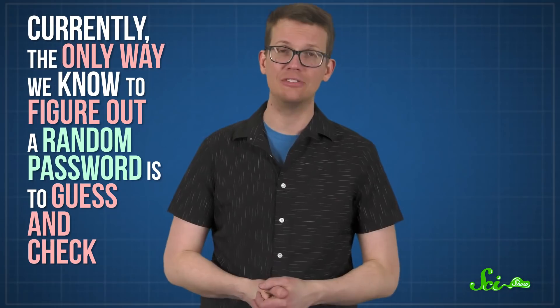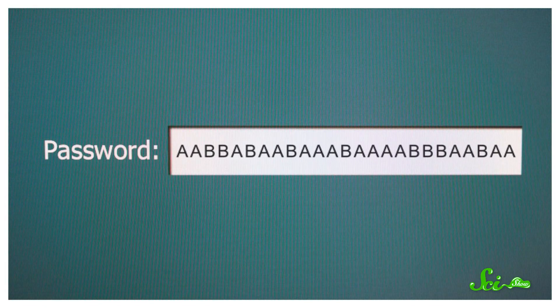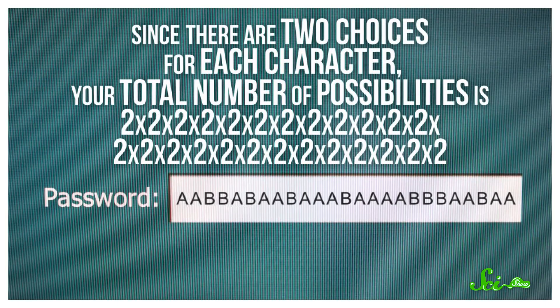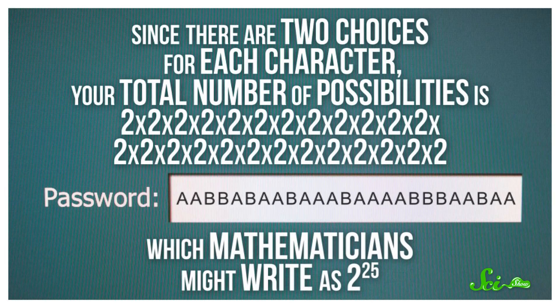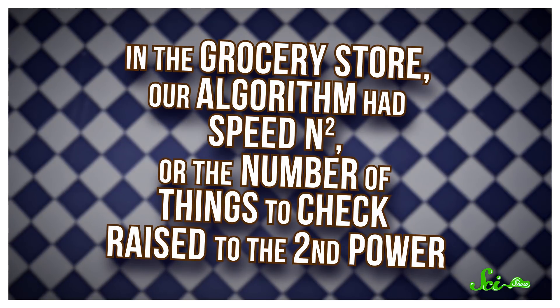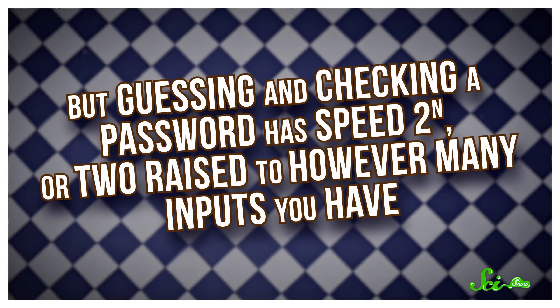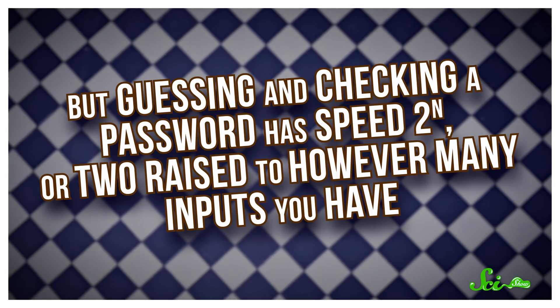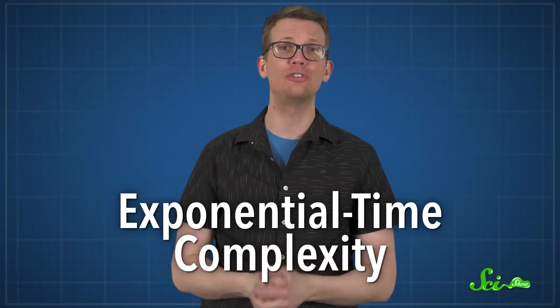As bad as that sounds, other algorithms are way worse. Think back to the password on your bank account. Currently, the only way we know to figure out a random password is to guess and check. So let's imagine you make a really dumb password — something that's 25 characters long but only uses two letters, A and B. Since there are two choices for each character, your total number of possibilities is 2 times 2 times 2 and so on, which mathematicians might write as 2 to the 25th power. That might seem like it has polynomial complexity like grocery shopping, but look a little closer. In the grocery store, our algorithm had speed n squared. But guessing and checking a password has speed 2 to the n — it's flipped. That's what computer scientists call exponential time complexity.